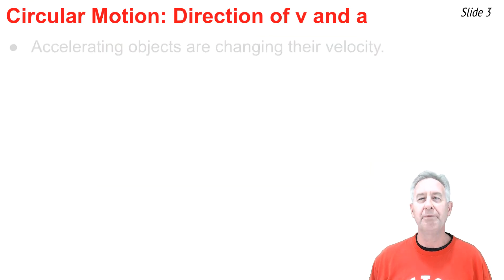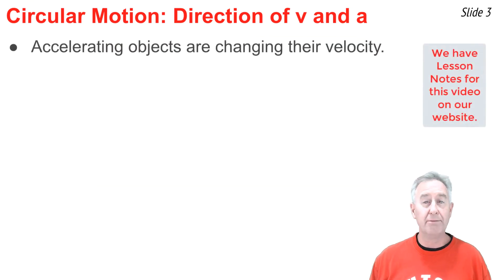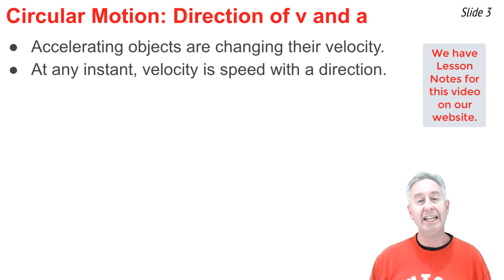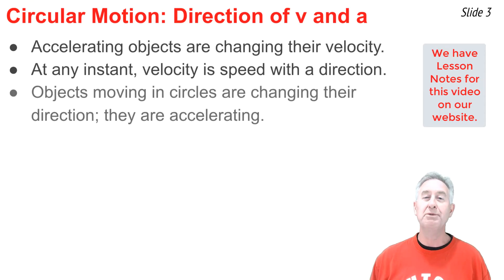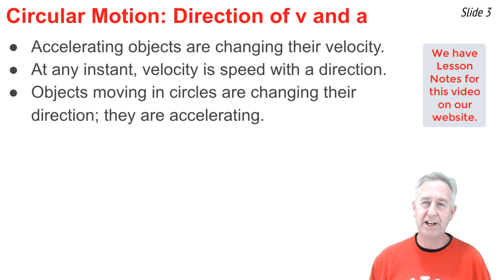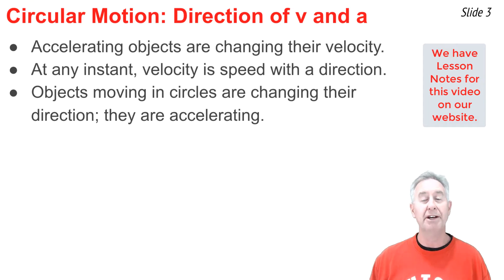Here's what we need to know. Accelerating objects are objects that are changing their velocity, and velocity is a vector that has a magnitude and direction. Objects that are moving in a circle are constantly changing their direction, and as such, they are accelerating, even if they never speed up nor slow down, because they're changing the direction of the velocity.